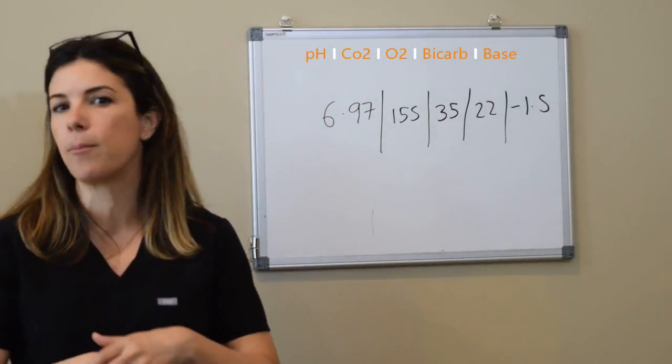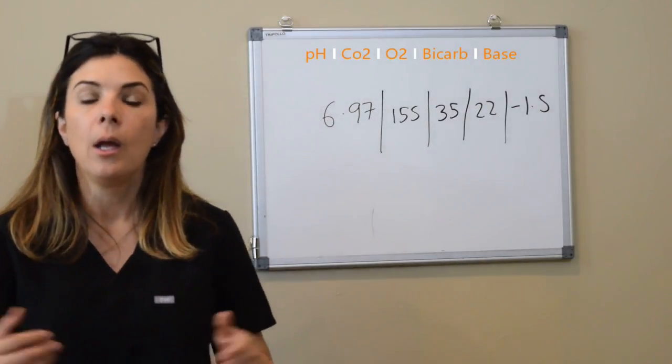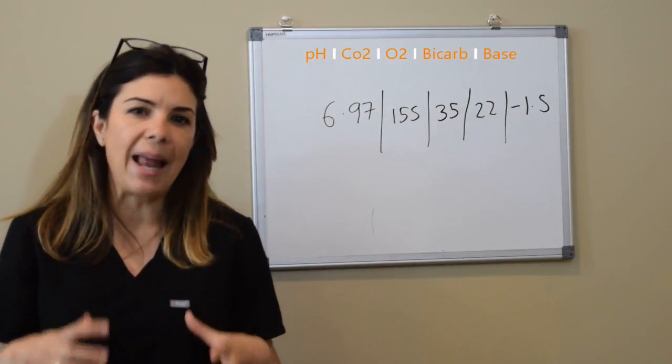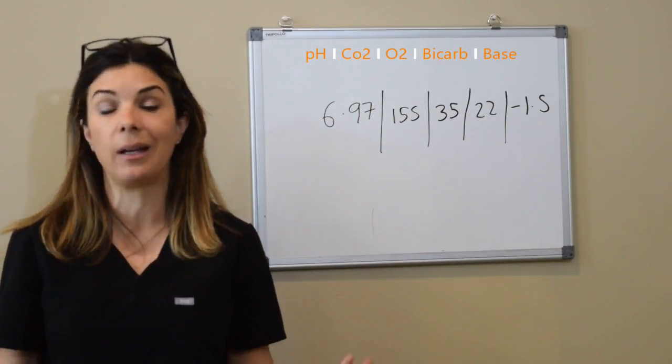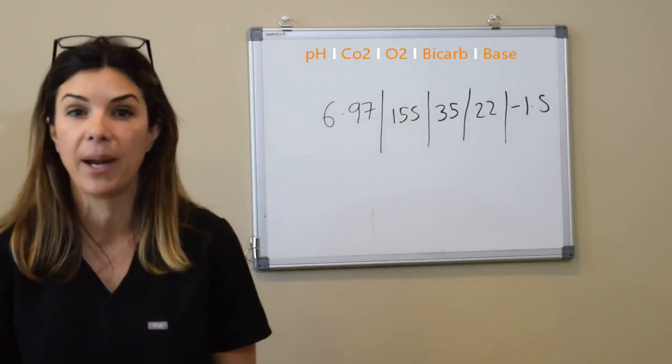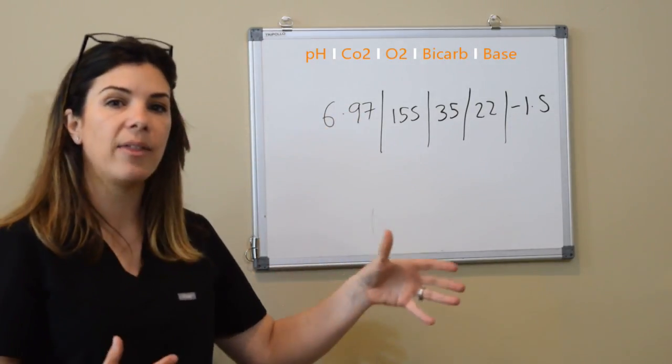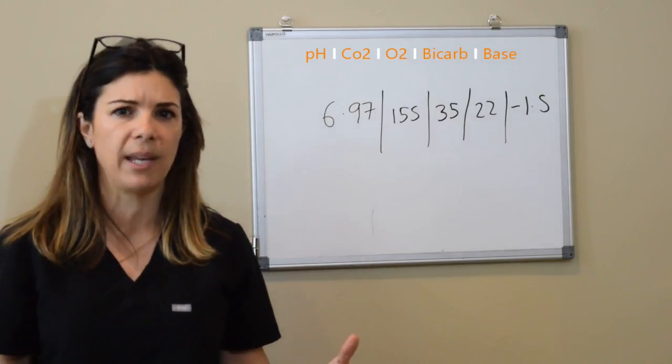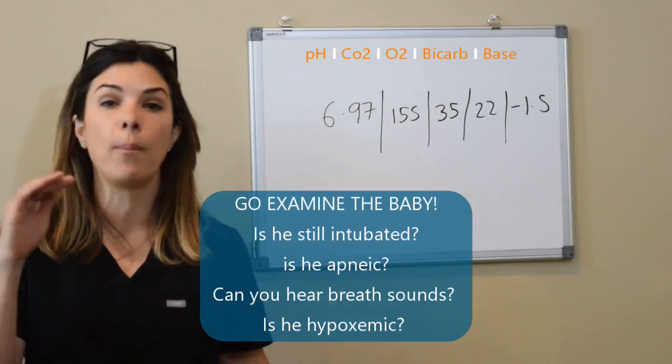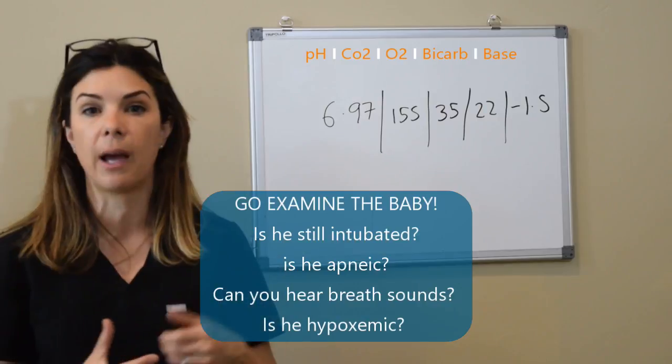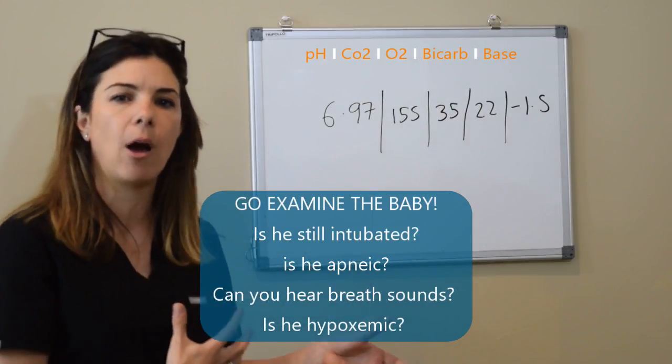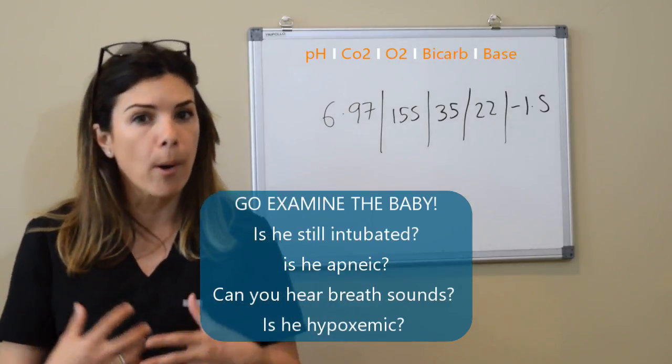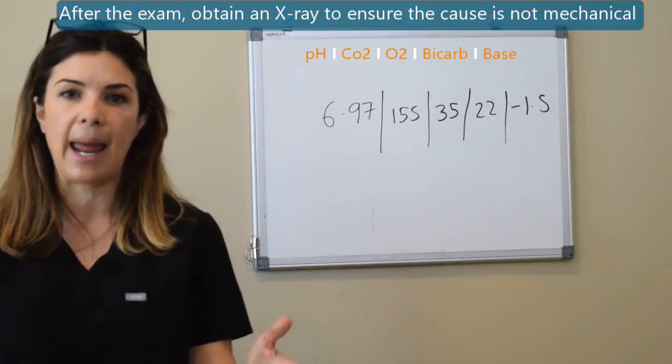Because it is such an elevated carbon dioxide, this probably wouldn't be a situation where I'd be like, okay, let's just increase the rate by 10. I mean, it is so high that we want to make sure that we're not missing anything else, or we don't just want to go up on the PIP a little bit to try to improve the tidal volume. Because this is such an abnormally high carbon dioxide.